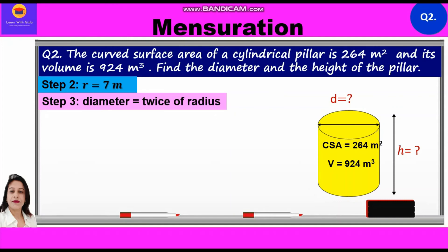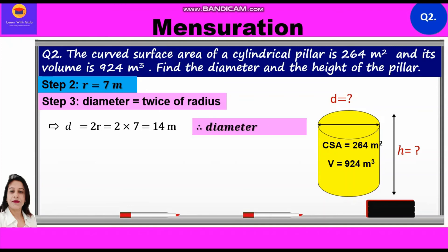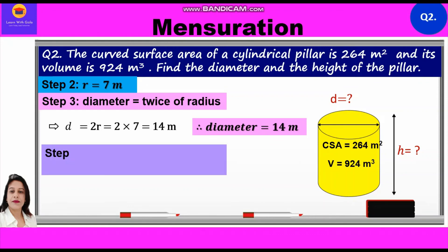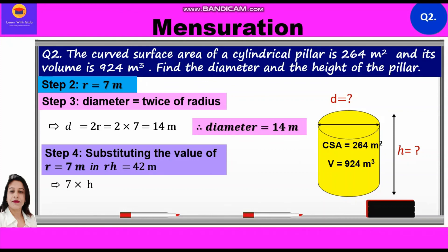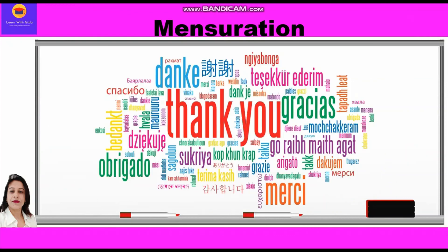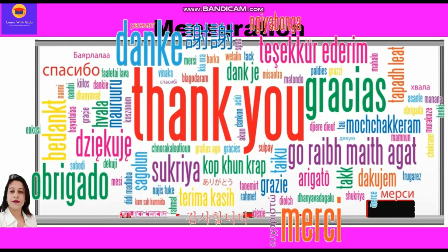In Step 3, diameter d = 2r = 2 × 7 = 14 meters. So the diameter of the pillar is 14 meters. In Step 4, substituting r = 7 in rh = 42: 7 × h = 42, so h = 42/7 = 6 meters. The height of the pillar is 6 meters. Hope you have understood these two questions. Thank you everyone.